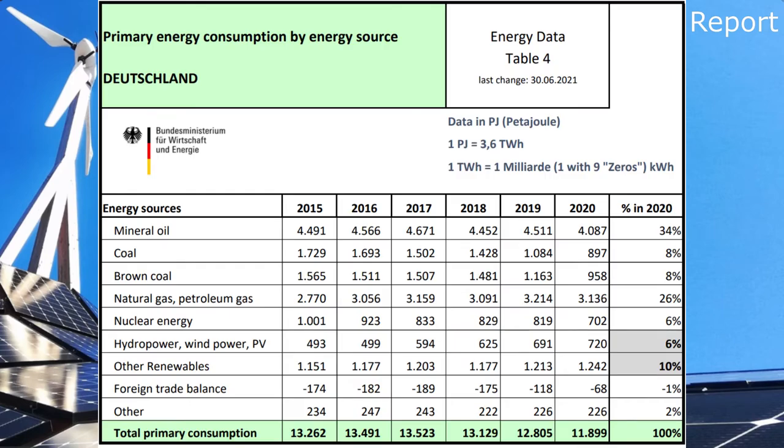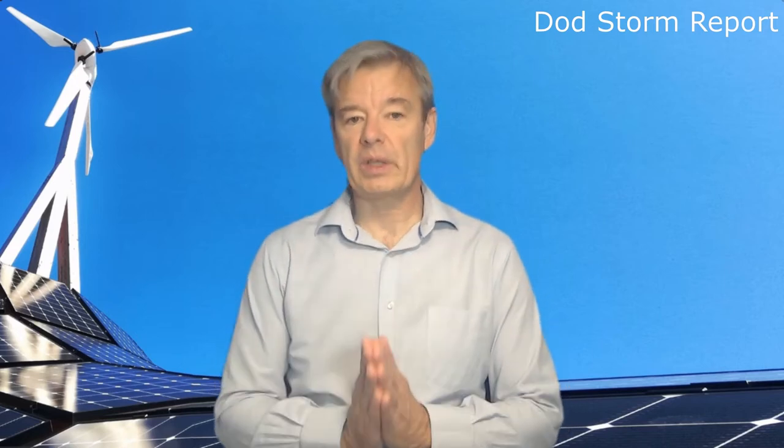Wind and PV saw a very special growth period around 2000 when Germany created many subsidies, but growth slowed in recent years. Together with hydropower, wind and PV have reached a share of six percent of total primary energy use. Other renewable energies — principally biomass, wood firing, and garbage burning — are considered mostly at their limit and cannot be expanded much.